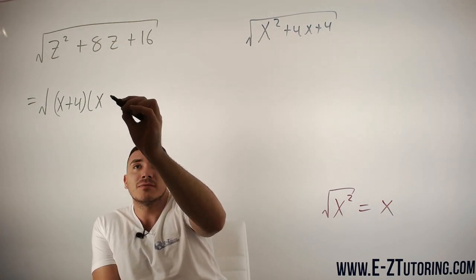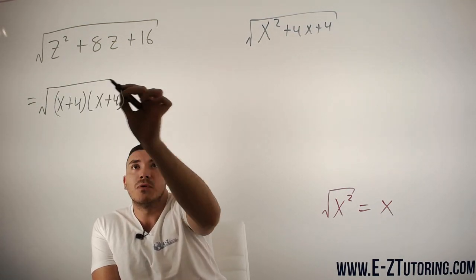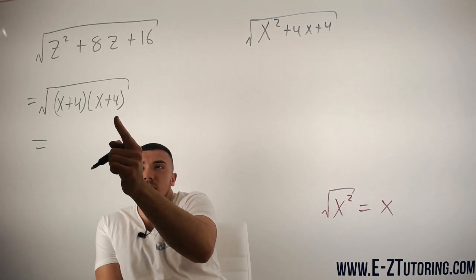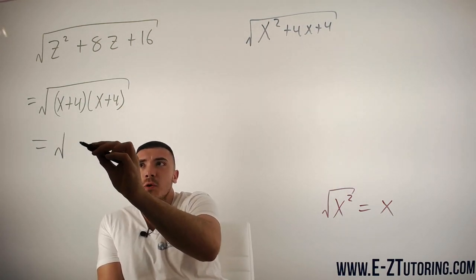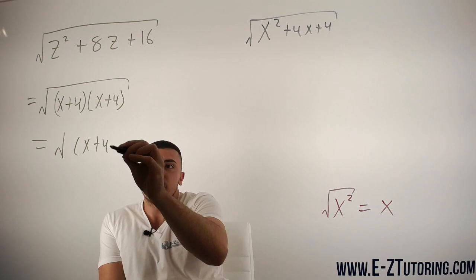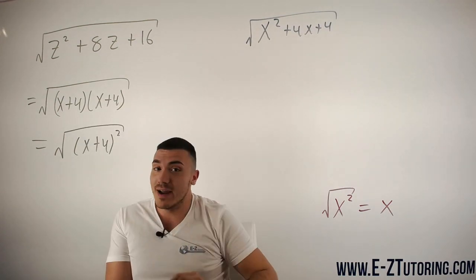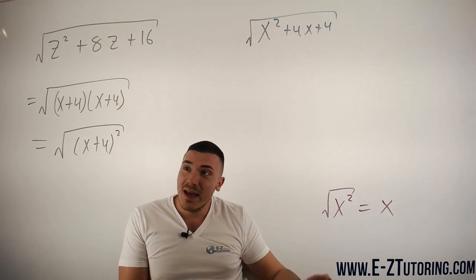it's just equal to x plus 4 times x plus 4. And we can rewrite two binomials like that as x plus 4 squared, right?